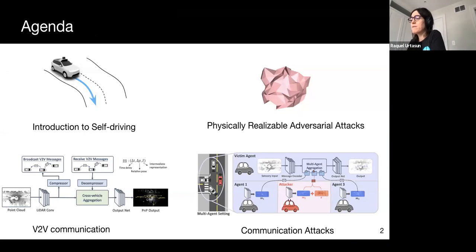First, I will very briefly review how self-driving systems work. I will then showcase adversarial attacks in the context of modern 3D perception algorithms, emphasizing what properties of those attacks we are interested in and how to potentially defend against them. I will show how to increase robustness of perception and motion forecasting systems via vehicle-to-vehicle communication and the vulnerability that this introduces. Finally, I will discuss mechanisms to increase robustness in this setting.